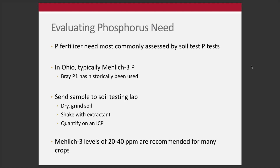For Ohio, the most common soil test extractor is Mehlich 3 for phosphorus. Bray P1 has historically been used, but there was essentially a shift a few decades ago and Mehlich 3 is really the default test. We'll talk a little bit more about that in a few weeks.